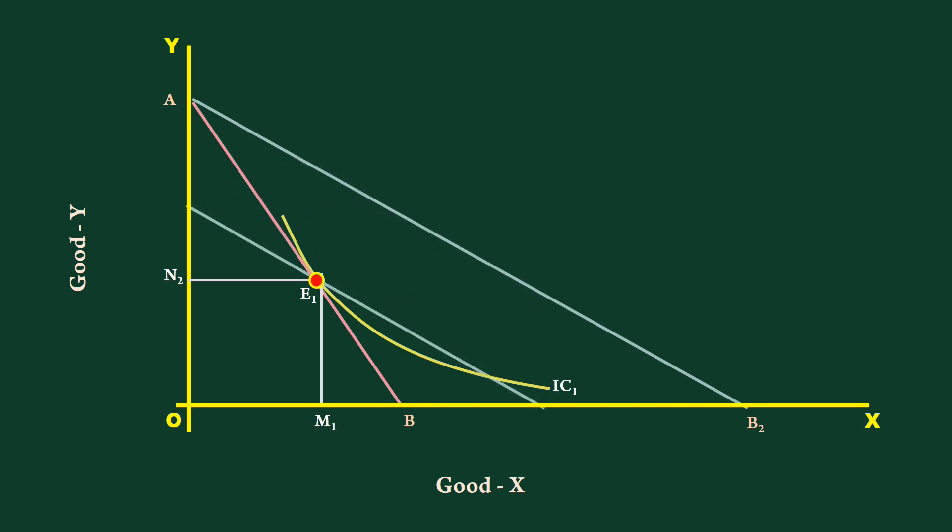Income of the consumer reduced by such an amount that will enable the consumer to go back to his original equilibrium point and buy the original bundle of goods is called reduction in income by cost difference.